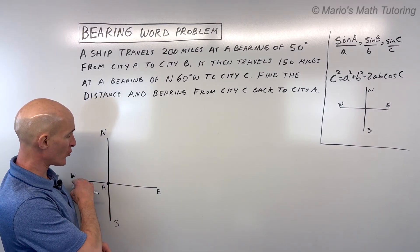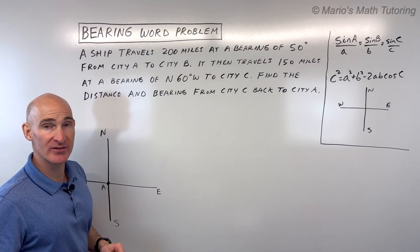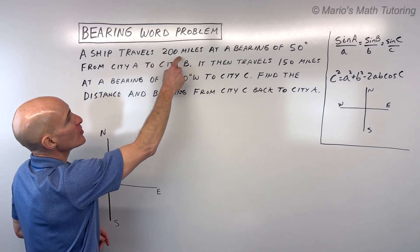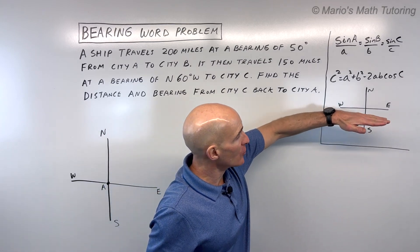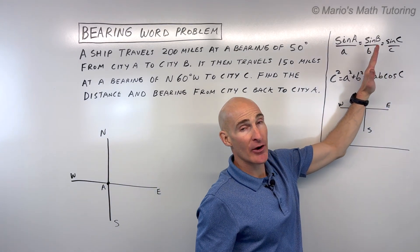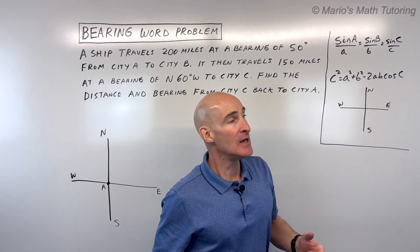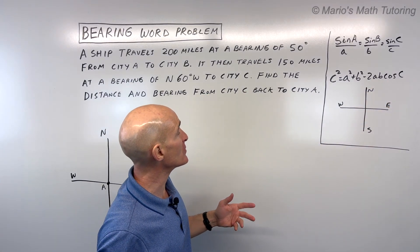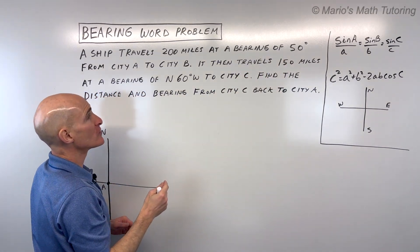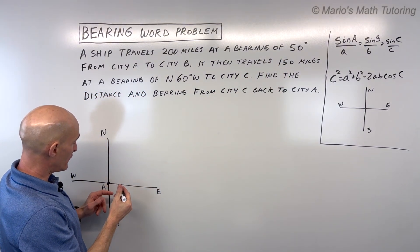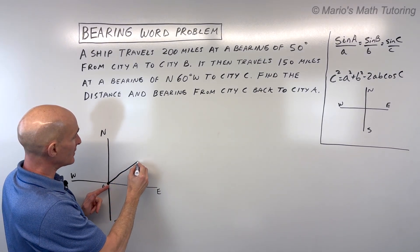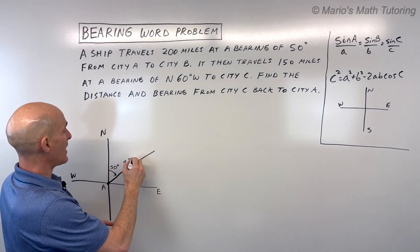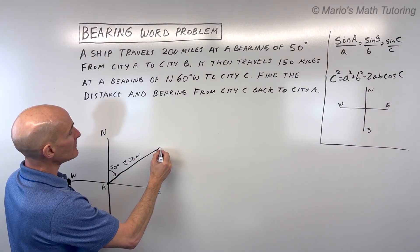The first thing I would do is draw a northeast-southwest directional system. I would start at city A, which is right here at the origin, and the ship is traveling 200 miles at a bearing of 50 degrees. Now we're used to going along the positive x-axis and measuring our angle counterclockwise from that positive x-axis if it's a positive angle. But with bearing, you start at the north and you rotate clockwise. So you find that north and you rotate 50 degrees clockwise, which would be right about here, and that's traveling 200 miles.